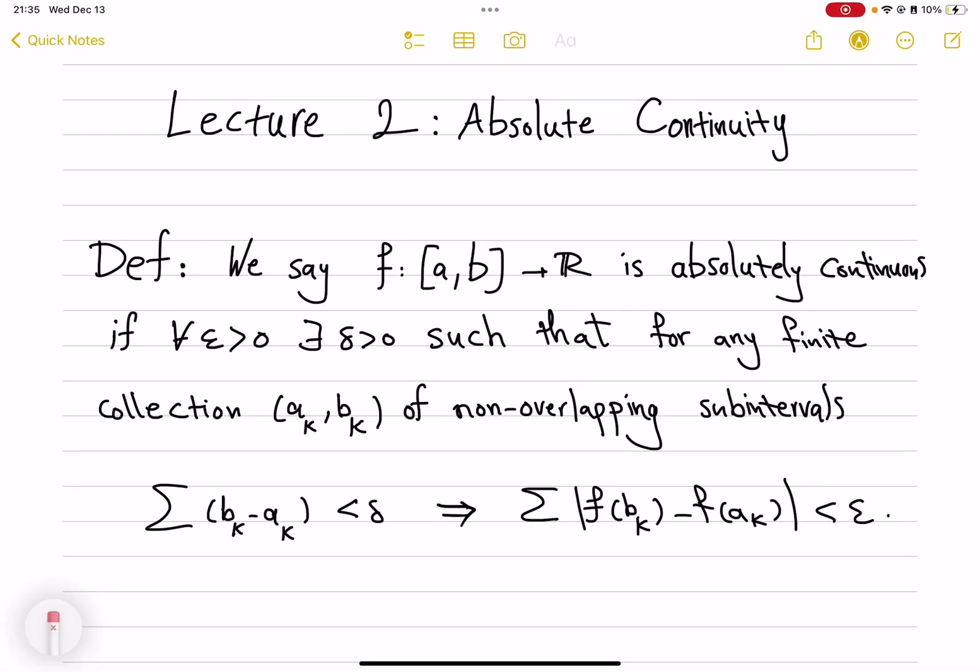Absolute continuity along curves will be the main feature of Newtonian Sobolev functions. But why is absolute continuity so central to Sobolev theory? This lecture tries to answer that question.